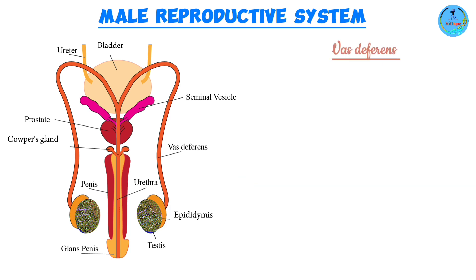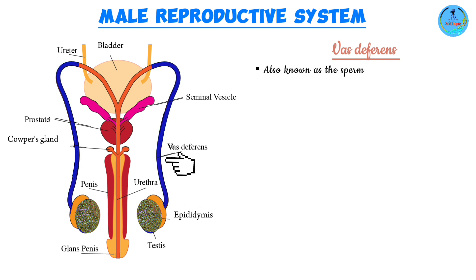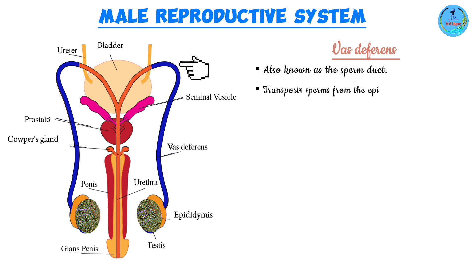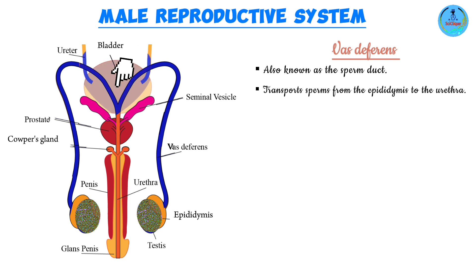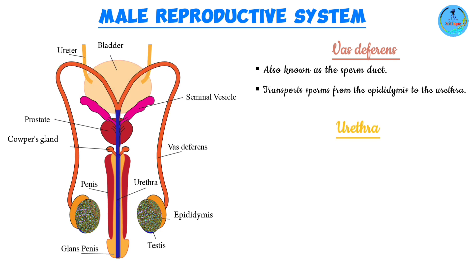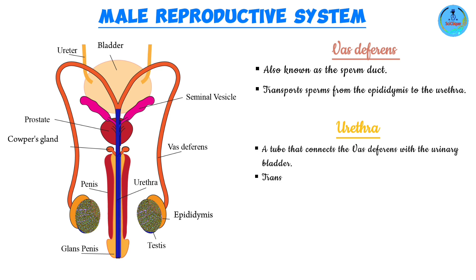From the epididymis, the sperm are then passed on to a wider tube called the sperm duct or the vas deferens, which transports the sperm from the epididymis to the urethra. The two vas deferens come together and open up into the urethra, which is a long tube that connects the vas deferens and the urinary bladder.